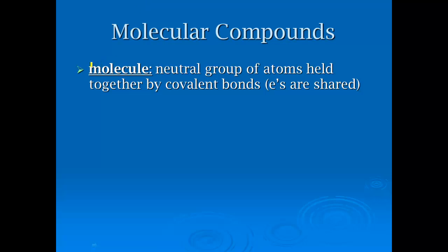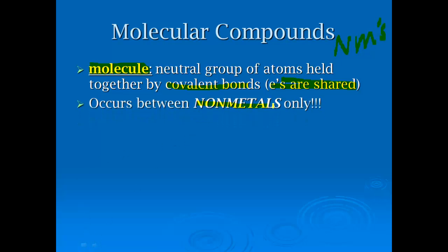We've got molecules — we've seen this term several times. A molecule is a neutral group of atoms held together by covalent bonds, and this is where electrons are shared. This involves two non-metals, which are to the right of the stair step on the periodic table.